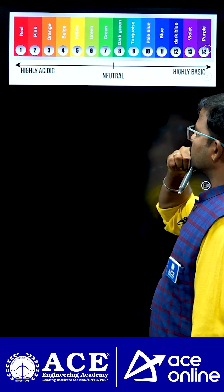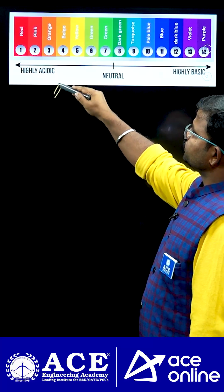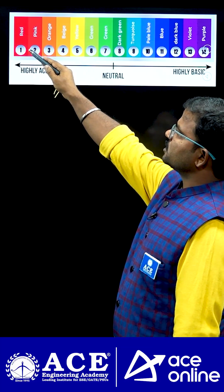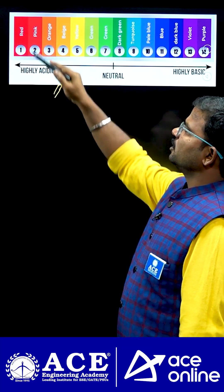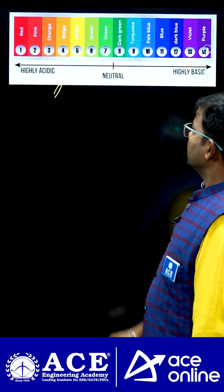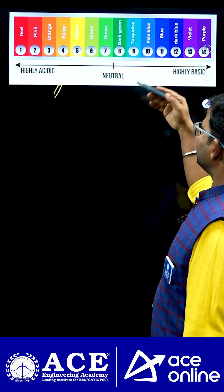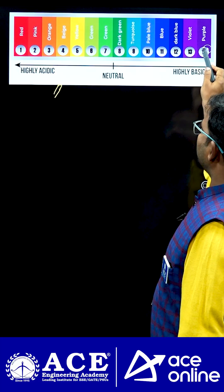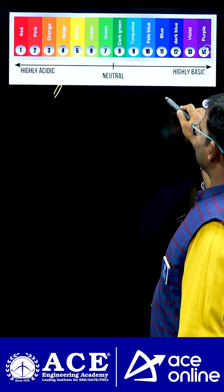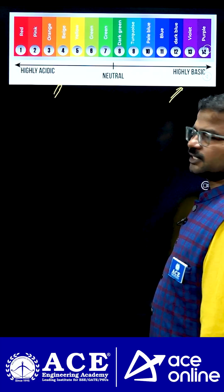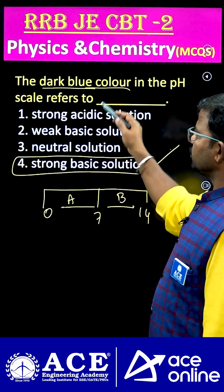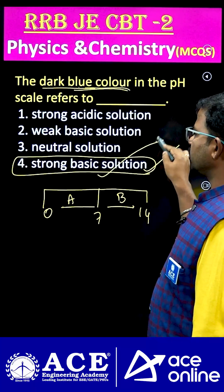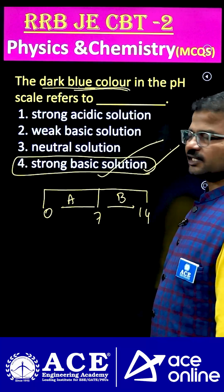Here is the conclusion. Mostly, if a solution exhibits strong acidic nature, its color would be red. Next, if the given solution can exhibit dark blue, violet, or purple, those are considered as highly basic. Here they mentioned dark blue color, so due to that, we should consider option 4 is the right answer.